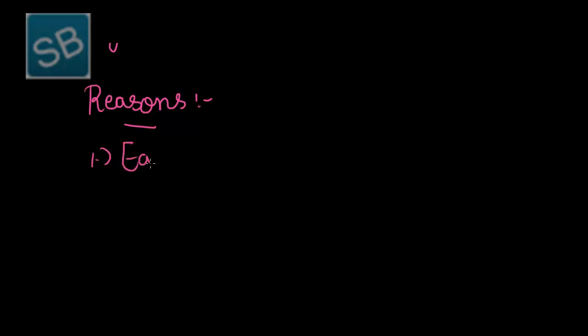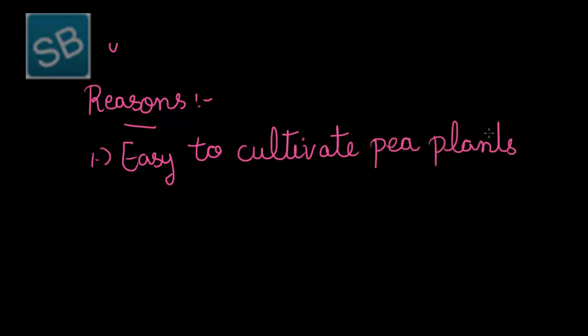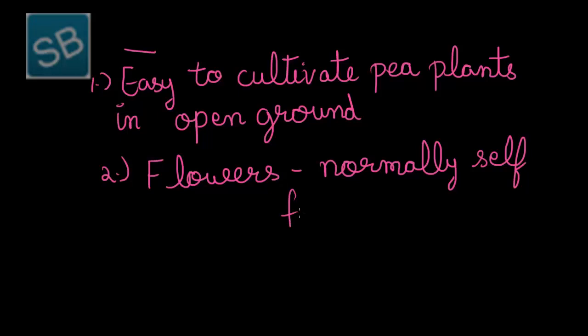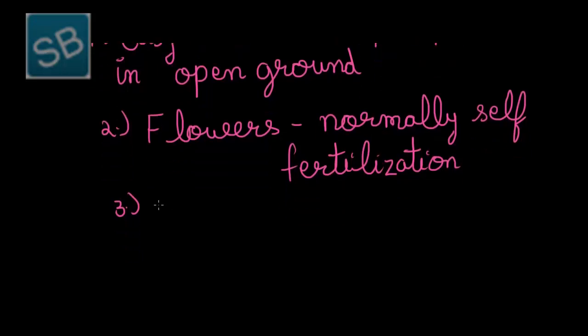First, it was very easy to cultivate the pea plants in open ground. Second, the flowers of the pea plant can normally self-pollinate, that is they can easily undergo self-pollination process. Third, the hybrids of garden pea were perfectly fertile. Fourth, the pea plant showed a number of contrasting characters, and therefore it was easy to study because of this variation in characters.